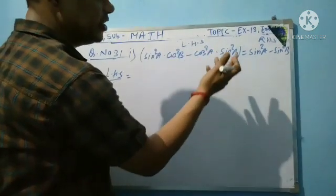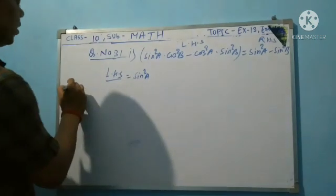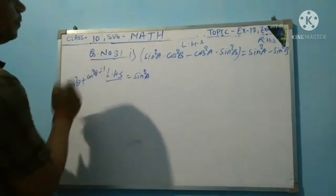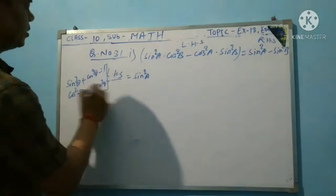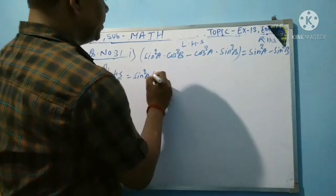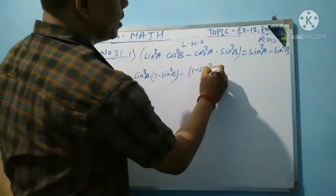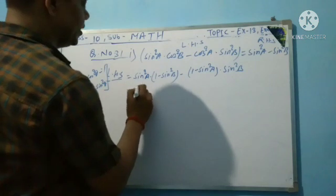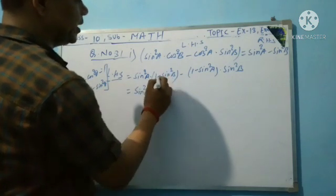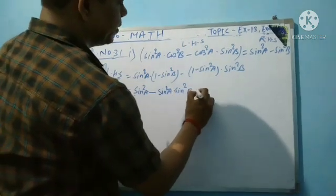Find the terms in sin²a and sin²b, so cos²a and cos²b are changed into the form of sin². We know that sin²θ + cos²θ = 1, so cos²θ = 1 − sin²θ. So cos²b is taken as (1 − sin²b) and cos²a is taken as (1 − sin²a). Multiplying: sin²a into (1 − sin²b) minus (1 − sin²a) into sin²b.